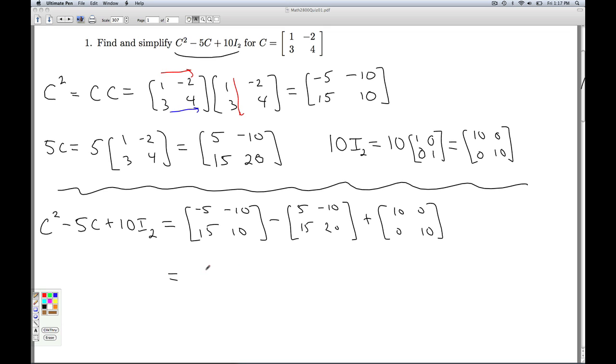And how do you add matrices? You add the corresponding entries. Let's see what happens. Negative 5, minus 5 is negative 10, plus 10 is 0. Negative 10, minus negative 10, is 0, plus 0 is 0. 15, minus 15, plus 0 is 0. And 10, minus 20, plus 10 is 0. And so we ended up getting the 2×2 zero matrix.